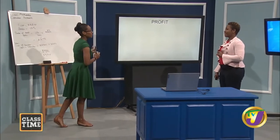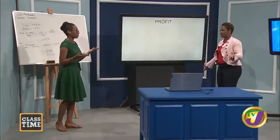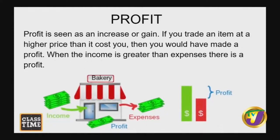We looked at discount and sales tax. Now we look at profit. Profit is seen as an increase or gain — if you trade an item at a higher price than it costs you, you would have made a profit. When income is greater than expenses, there is a profit. If your expenses are greater than your income, then you have a loss. Loss is seen as a decrease.